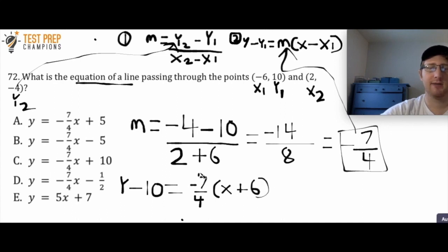Okay. And so now we're going to take this -7 over 4 and we're going to distribute it. So I'm going to do -7 over 4 times x. And then -7 over 4 times 6. And when I rewrite, it's going to look like this. I've got y minus 10 equals -7 over 4x plus what?